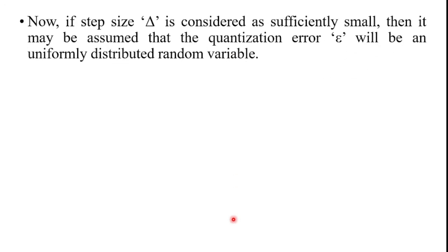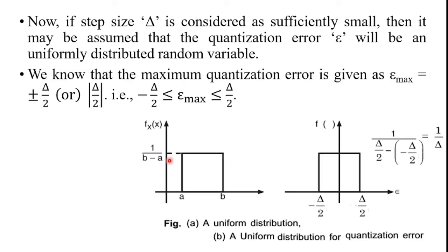Now if the step size delta is considered sufficiently small, it may be assumed that the quantization error epsilon will be a uniformly distributed random variable. The maximum quantization error is given as epsilon_max = plus or minus delta/2. This value was already derived in the working principle of quantization. Hence, over the interval from minus delta/2 to plus delta/2, the quantization error may be assumed to be a uniformly distributed random variable, and this is shown in the graphical representation of the uniform probability density function.